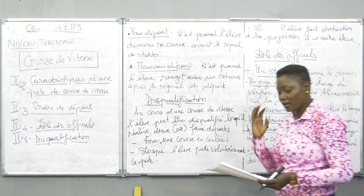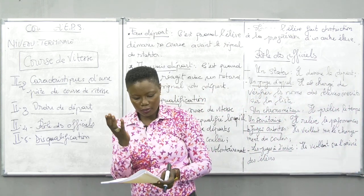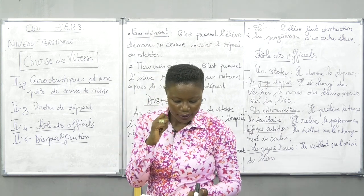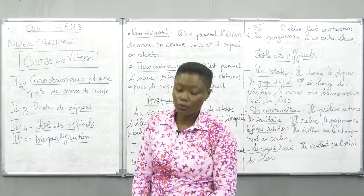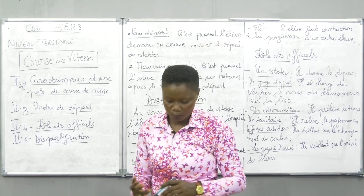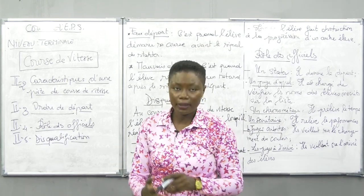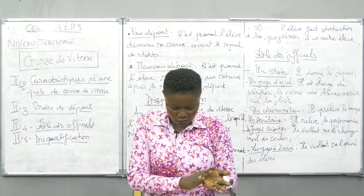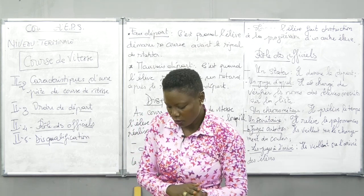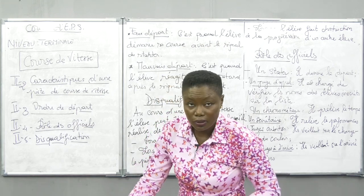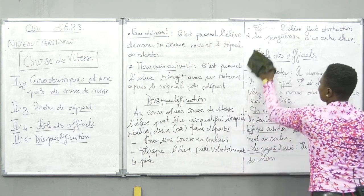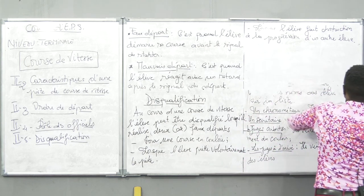Nous avons fini avec la disqualification. Maintenant, nous passons aux matériels utilisés. En athlétisme ou au 100 mètres, il y a des matériels qu'on utilise: le claquoir, le sifflet, le chronomètre, les plots ou encore drapelés. Nous avons le décamètre ou le pentamètre, et les starting blocks.